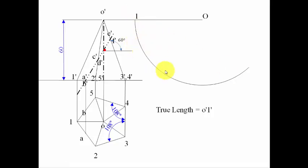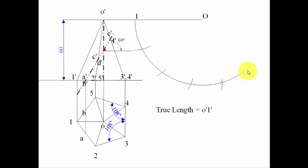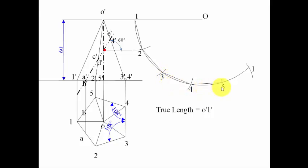The next step is to have points 2, 3, 4 and 5. The distance between 1 and 2 is 30mm since the base edge is 30mm. Take an arc of 30mm in your compass and with 1 as center put an arc; that intersection is point 2. Continue the same way — with each new point as center — to get points 3, 4, 5 and back to 1. All these points are joined by straight lines, so draw lines from 1 to 2, 2 to 3, 3 to 4, 4 to 5, and back to 1.